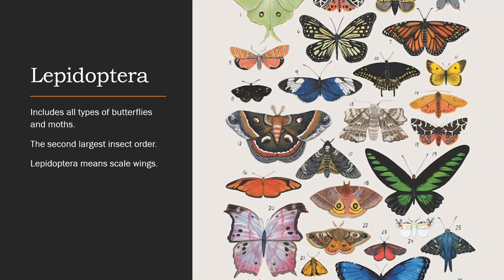Lepidoptera is the order that both moths and butterflies belong to. They are very similar looking, but they are still very different. On the right you can see just different ones, and you can point some of them out. One of my favorites is number 17 — it looks like it has a skull on the back of its head. This is the second largest insect order, which means there are a lot of different types of moths and butterflies.